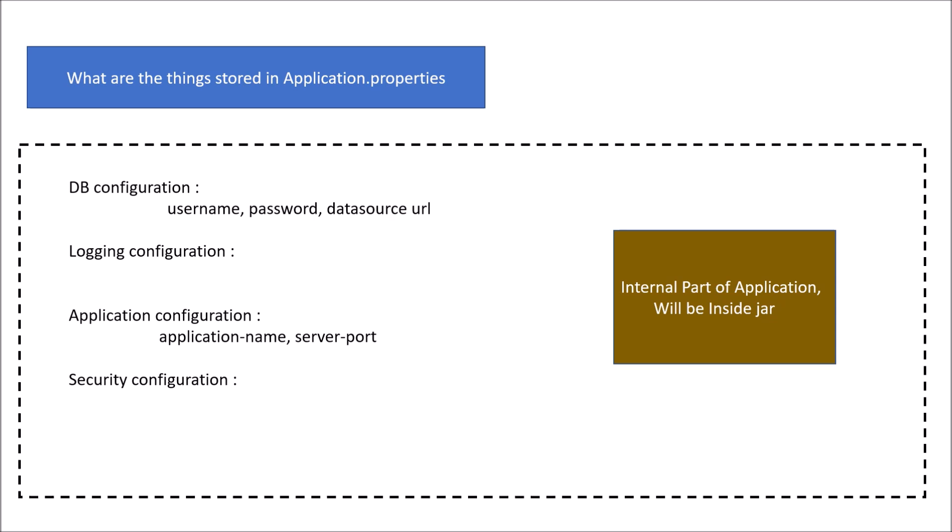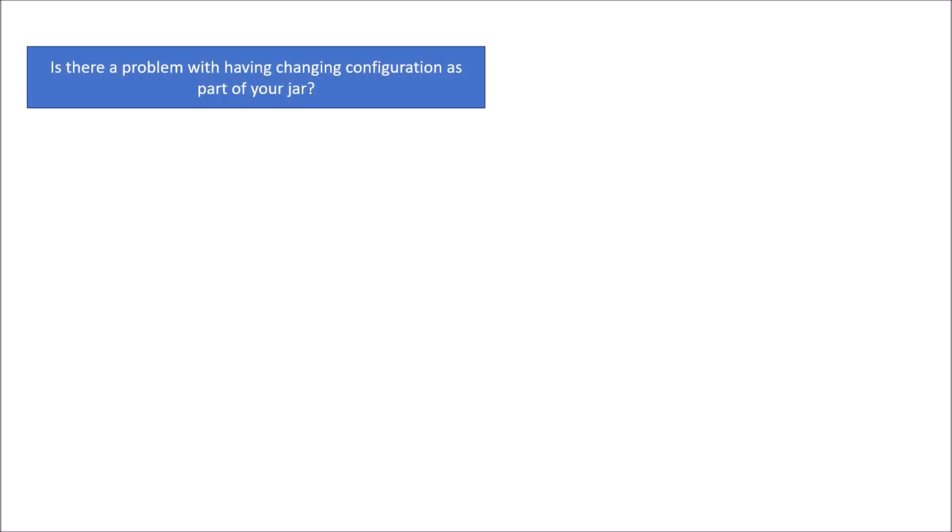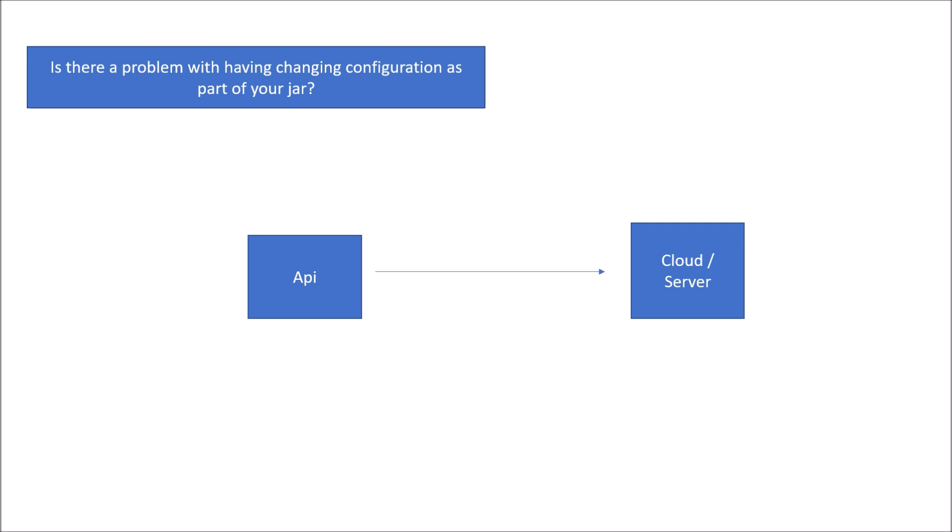Now think about what will happen if you keep changing this configuration frequently. The question is: is there a problem with having frequently changing configuration as part of your jar? To answer that, consider you have an API deployed to a cloud or traditional server. When you make configuration changes very frequently, you would also need to reflect those changes in the deployed application, which means you would need to repackage and redeploy your jar.